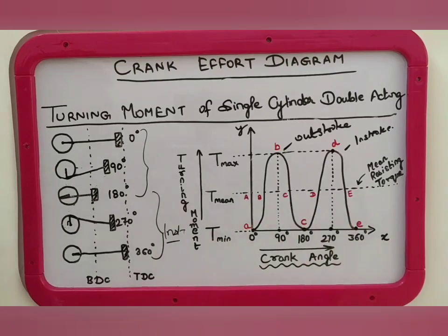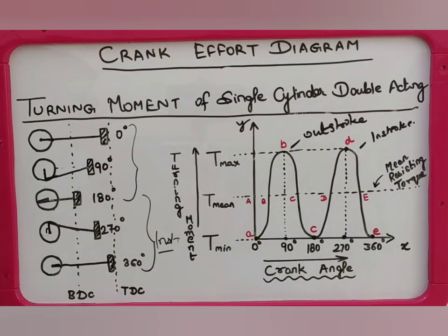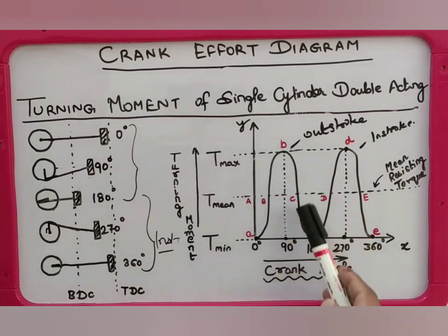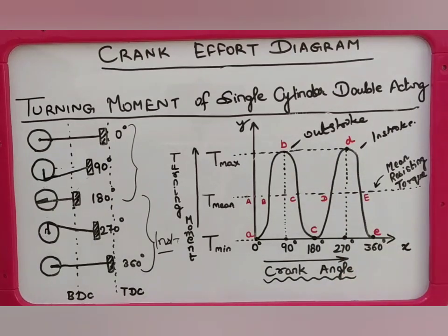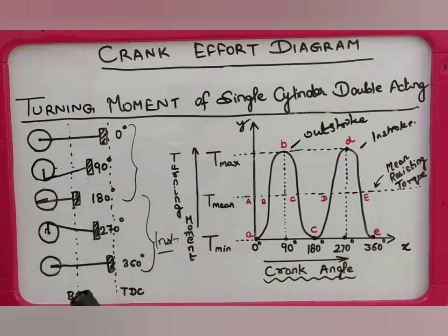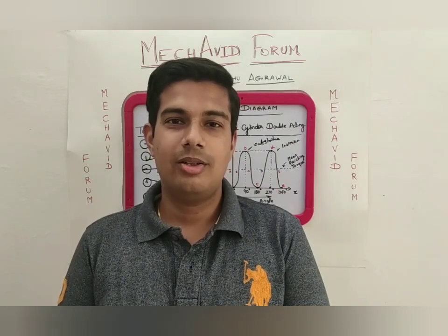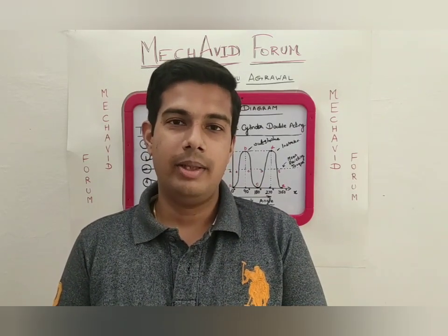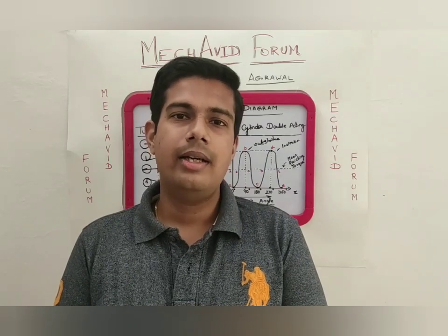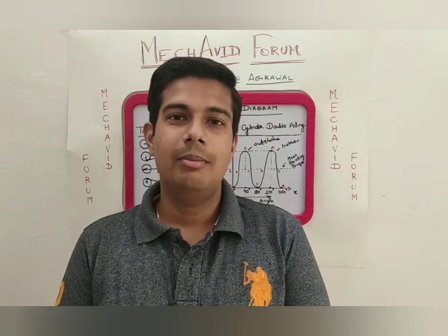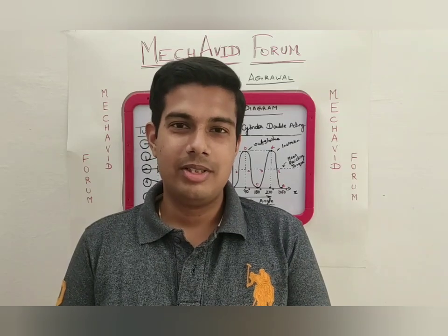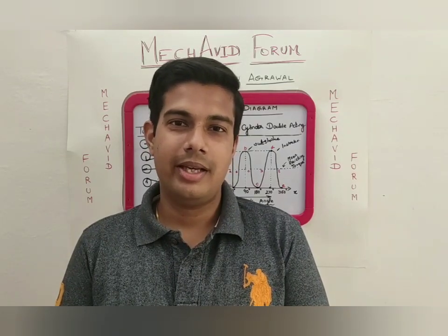So in this way, the work done by the engine is clearly visible from the outer stroke and the inner stroke, and the torque developed by the engine at different positions of the crank drives the engine. This was a precise explanation of a turning moment diagram for a single cylinder double acting engine, that is a two-stroke engine, and a crank effort diagram. If you like this explanation, please do like the video and subscribe to the channel for more similar updates. Thank you and bye bye.